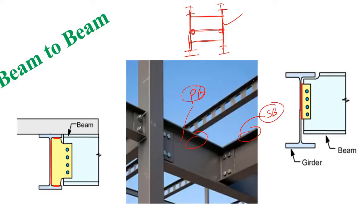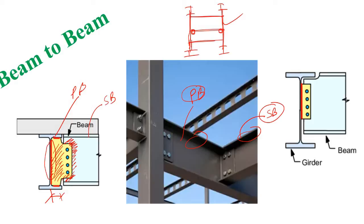To construct a shear connection between the primary and secondary beam, you have two options. First, you can bring the two beams together and extend the shear tab or plate to reach the web of the secondary beam, because the flange width prevents you from bringing the webs close together. Second, you can use a shorter shear tab, but in that case you need to bring the web of the secondary beam closer by cutting the top flange.